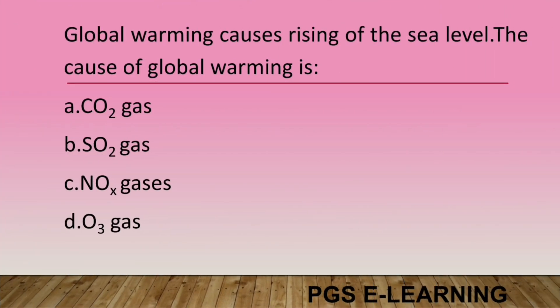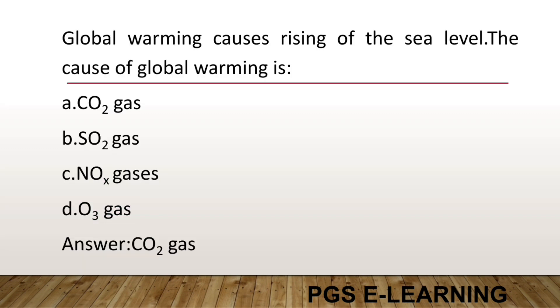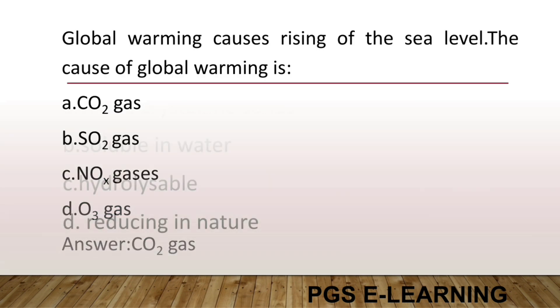Global warming causes the rising of sea levels. The cause of global warming is: CO2 gas, SO2 gas, NOx gases, or O3 gas. Correct answer is CO2 gas.